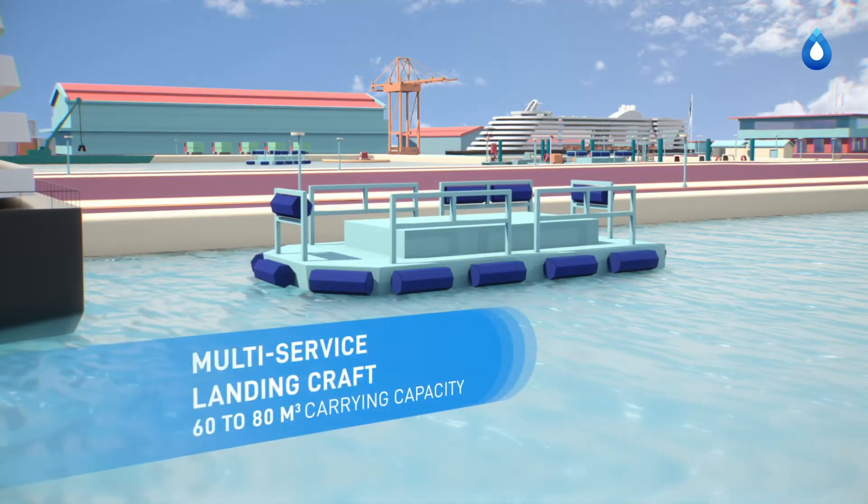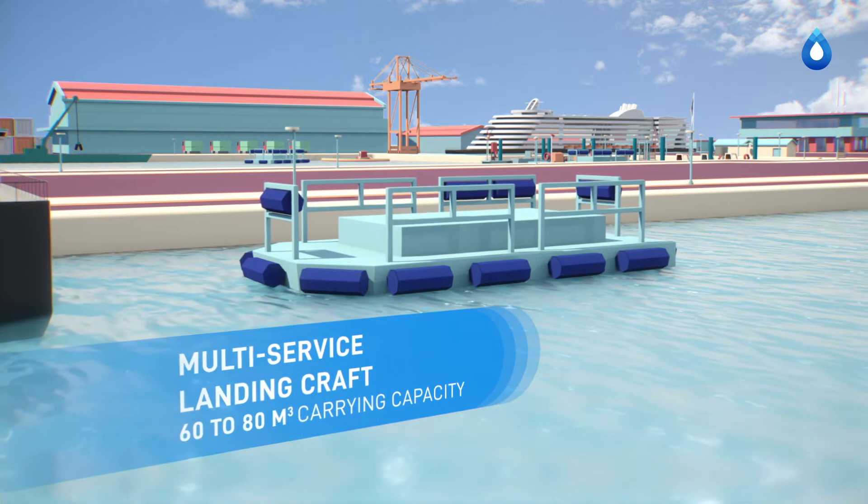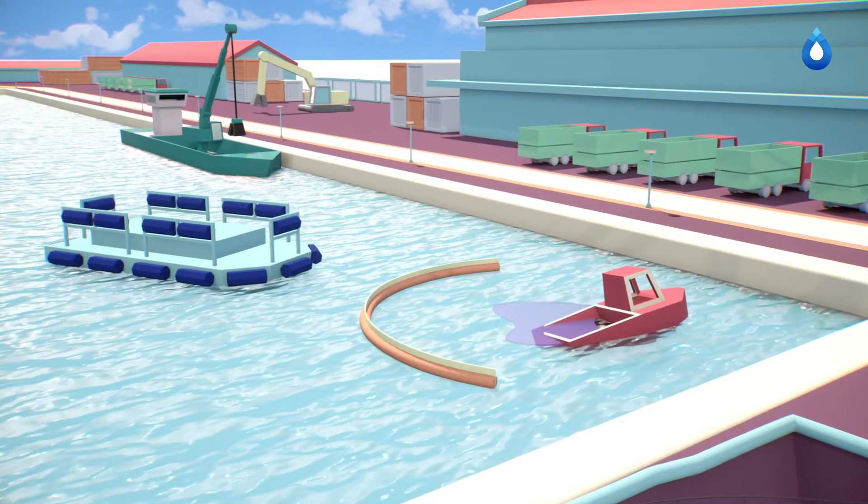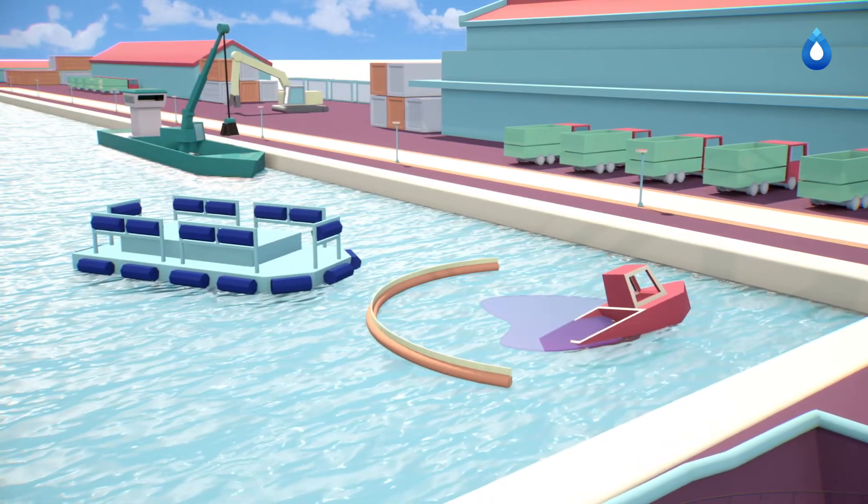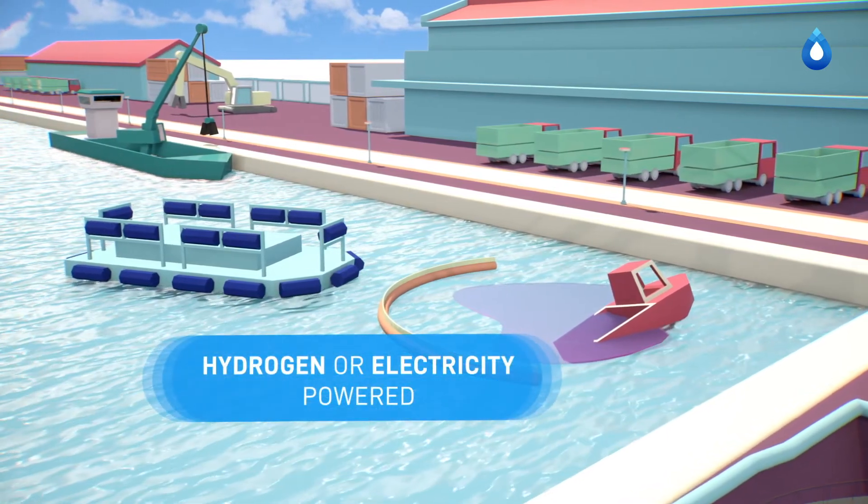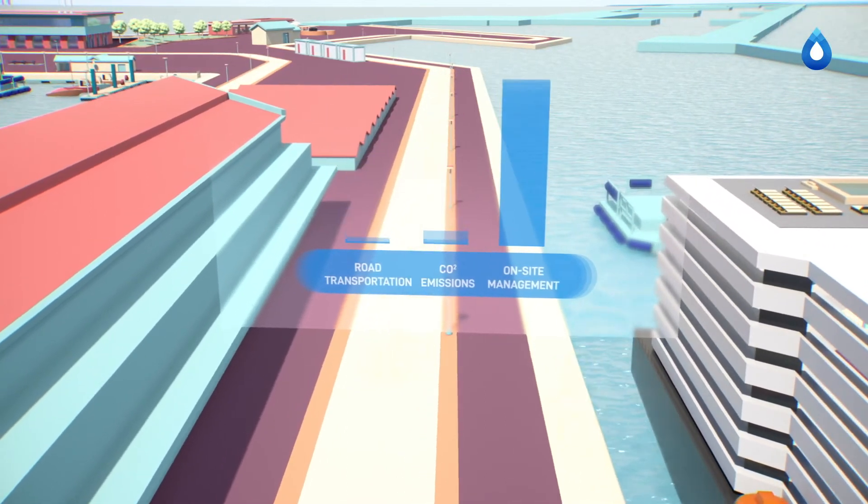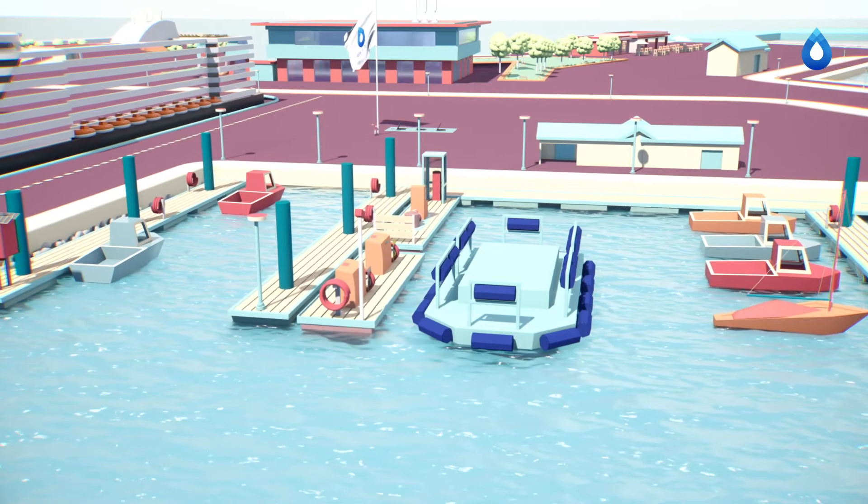A multi-service landing craft like this one can collect wastewater from any type of vessel, as well as deal with surface water pollution. Powered by hydrogen or electricity, and with a carrying capacity equivalent to more than 10 trucks, it helps prevent logistical problems and truck congestion.